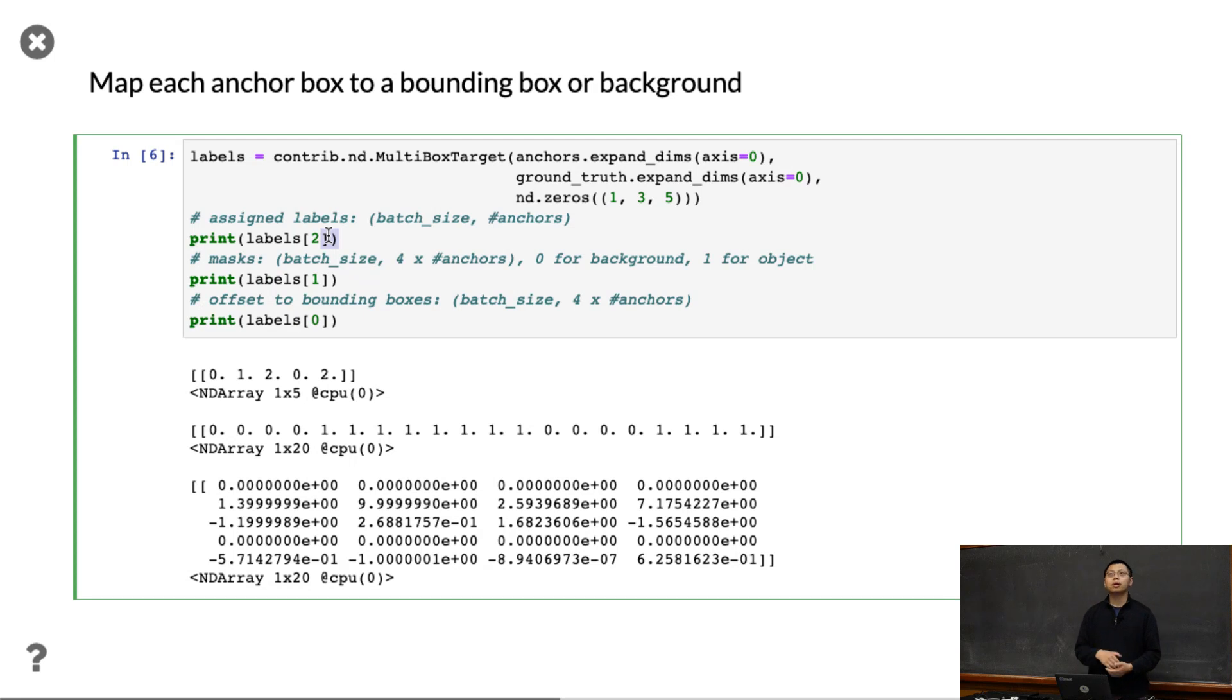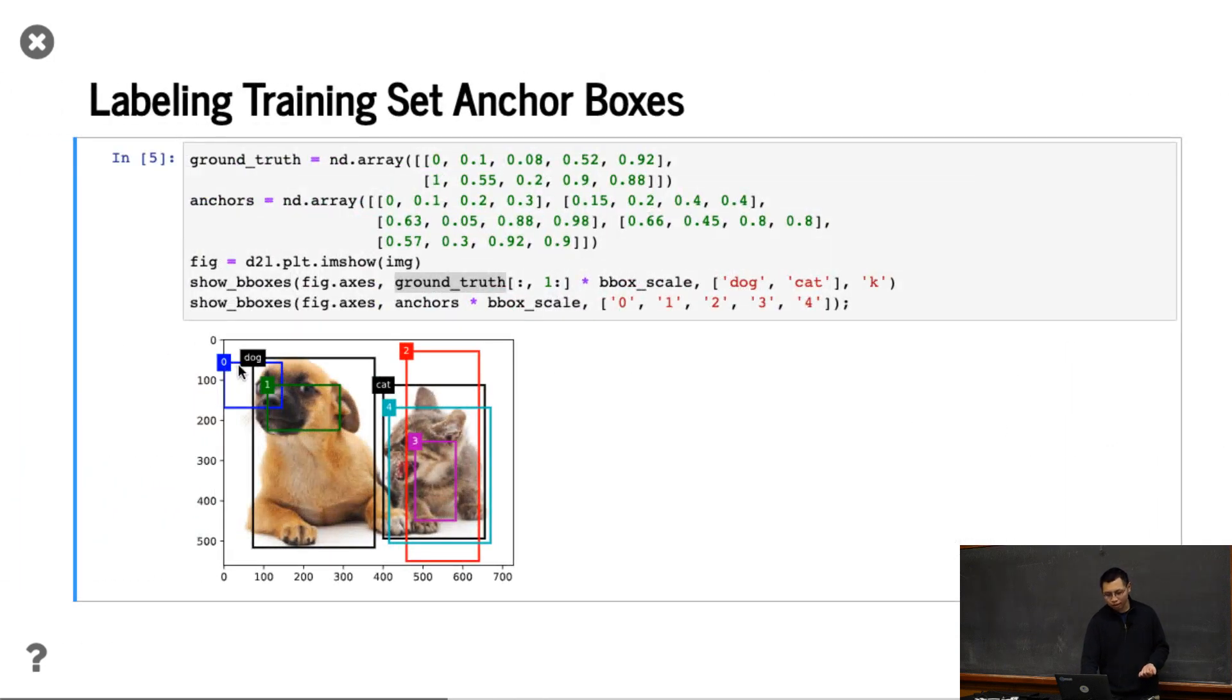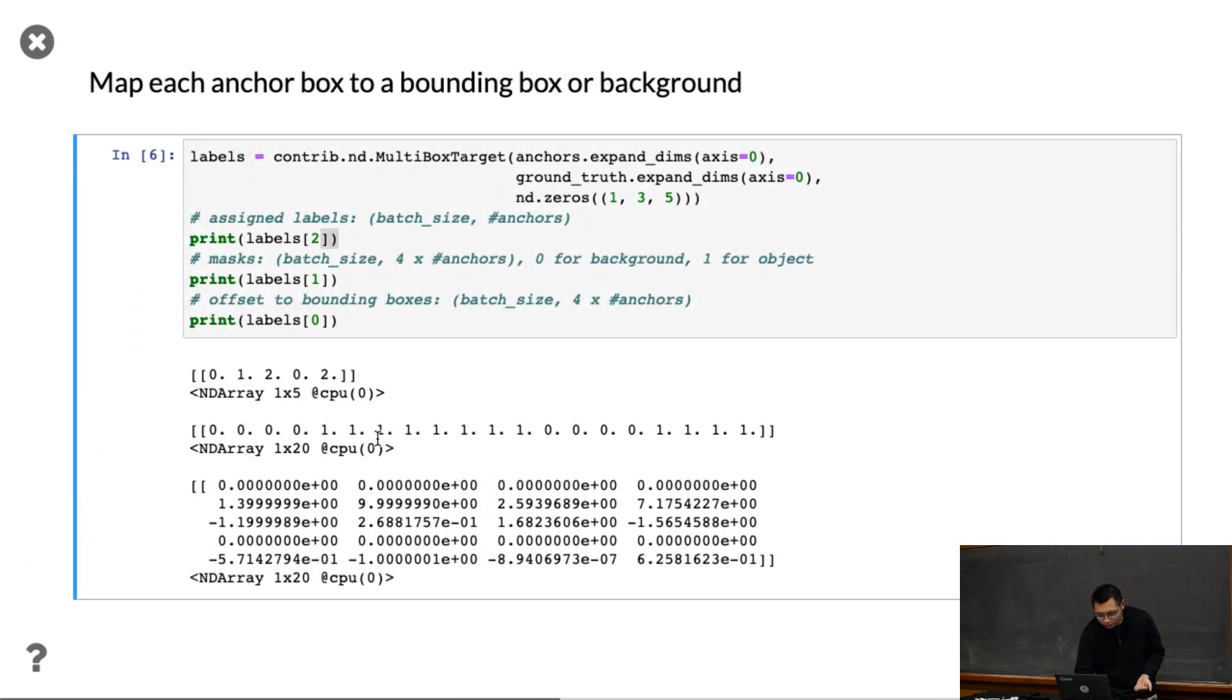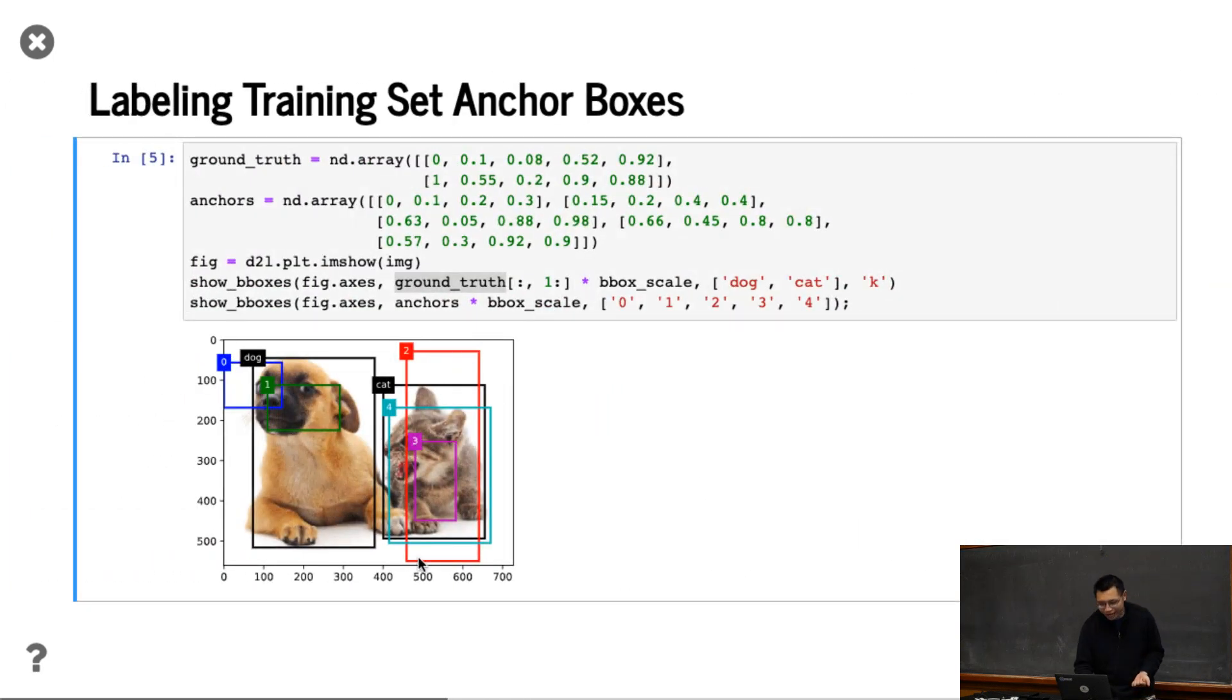The last one is called the label. We assign labels to each anchor box. Here we have five anchor boxes and two objects, and we give zero to background. This one assigned to dog, this one assigned to cat, the fourth one assigned to background, and this one to cat. So zero is a background, one is actually a cat, one is a dog. The reason this one is kind of labeled as dog is because there's no better anchor boxes here. So even this one is labeled as dog, it's not very accurate to the actual bounding box that we have.